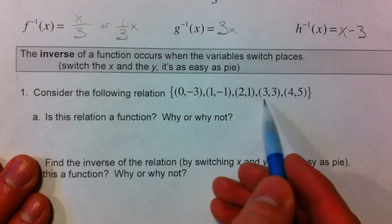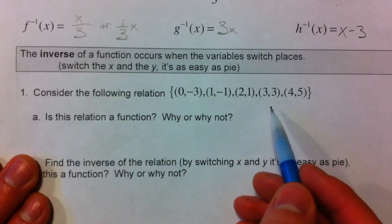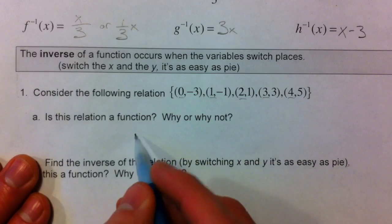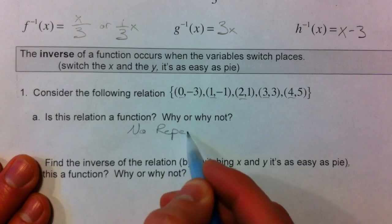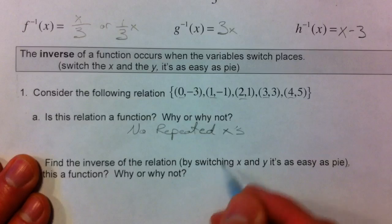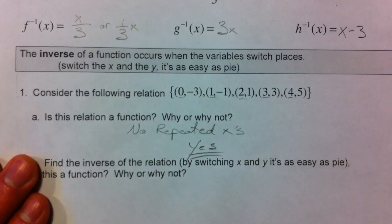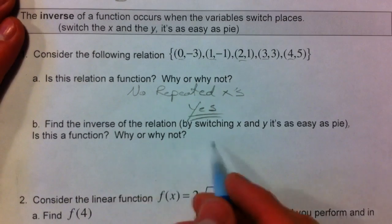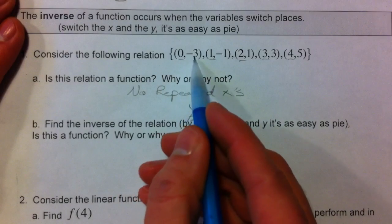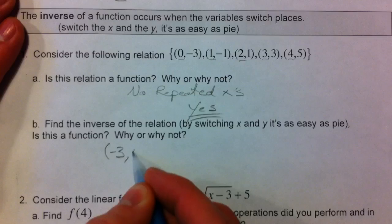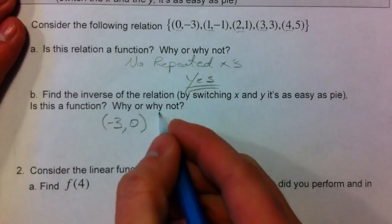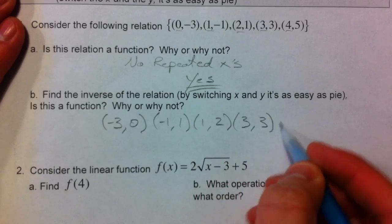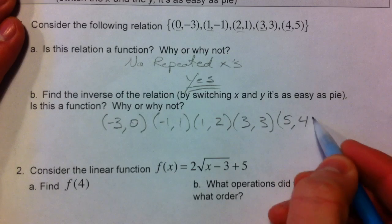Here's a set of coordinates: (0, -3), (1, -1), (2, 1), (3, 3), (4, 5). First off, is it a function? The x-values are 0, 1, 2, 3, 4 — all different, no repeated x's — so yes, it is a function. If you repeat an x, it has two different answers for the same question, and we don't want that. The inverse of the relation is just switching: if 0 goes to -3 in the function, then -3 goes to 0 in the inverse. -1 goes to 1, 1 goes to 2. All we're doing is swapping x for y and y for x.